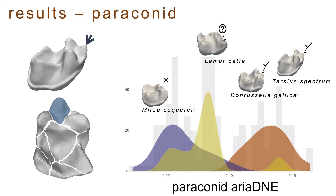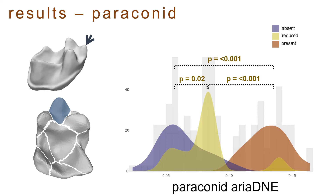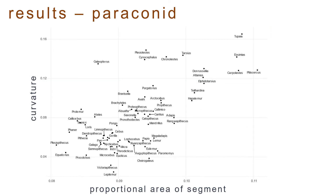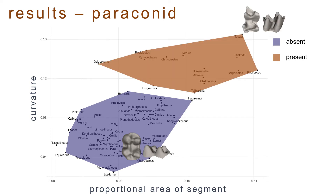This difference in Ariadne, while continuous, is significantly different between each of these character states. The morphospace created by the relationship between proportional area of the segment and the curvature of the segment also clusters neatly by character states, where teeth without a paraconid have relatively smaller mesial-most segments with low curvature, and teeth with a paraconid have relatively larger mesial-most segments with high curvature. Teeth described as having reduced or weak paraconids nestle in between.